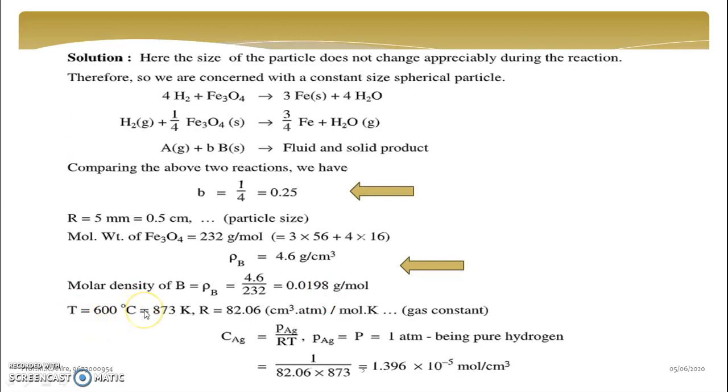Now temperature you will convert in Kelvin, R is 82.06, and you are knowing that if you are knowing pressure, you can calculate concentration. Here we will calculate the concentration of hydrogen, because A component is hydrogen and B component is Fe3O4.